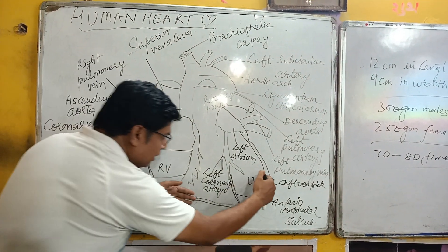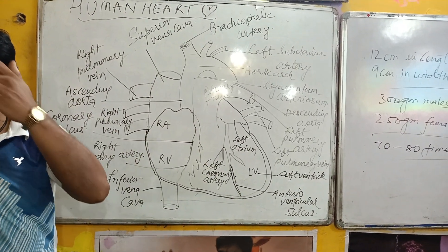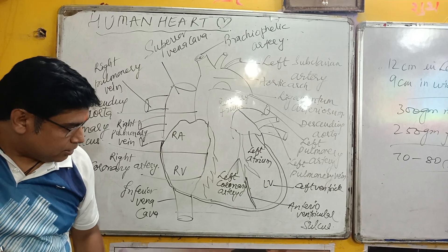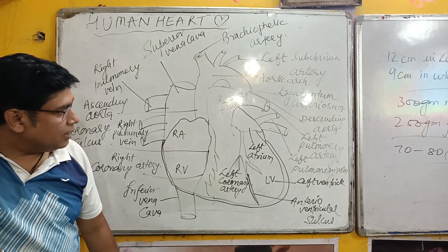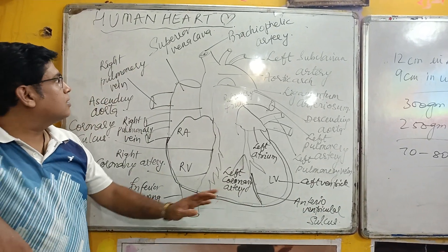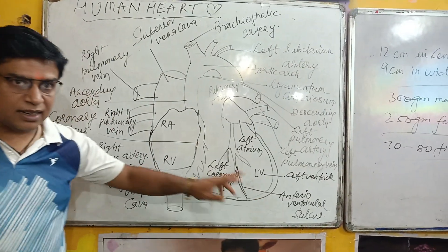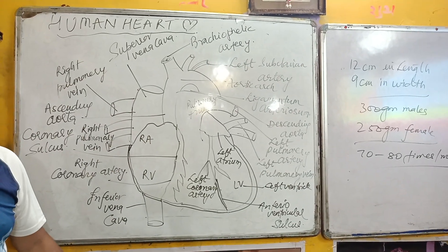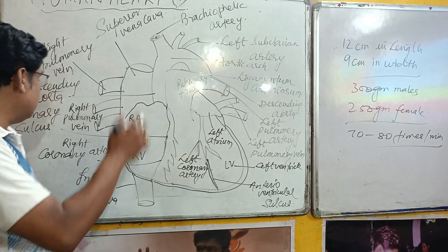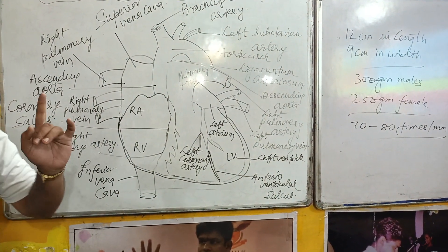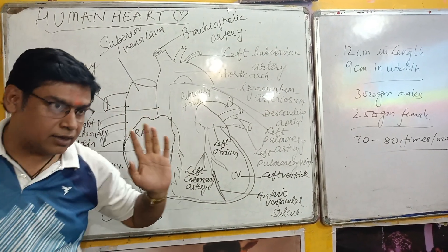The ventricles are on the front lower part of the heart, and the auricles are at the upper broader end. Externally, you can see the anterior ventricular sulcus and the coronary sulcus. The coronary sulcus is a transverse groove that separates the auricles and ventricles. There are also anterior and posterior ventricular sulci.